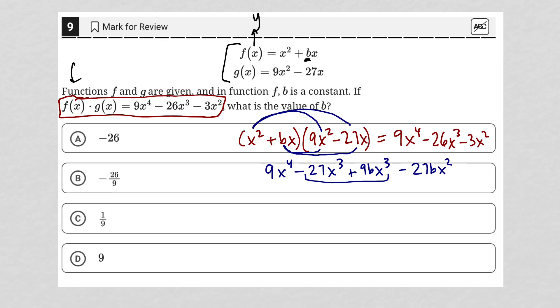So I'm glad I did that because honestly, I'd rather use this term. So what am I saying? I'm saying if I know that the middle term here, the x cubed term has to be negative 26x cubed, then that means that my middle term here that includes x cubed must also be negative 26x cubed.